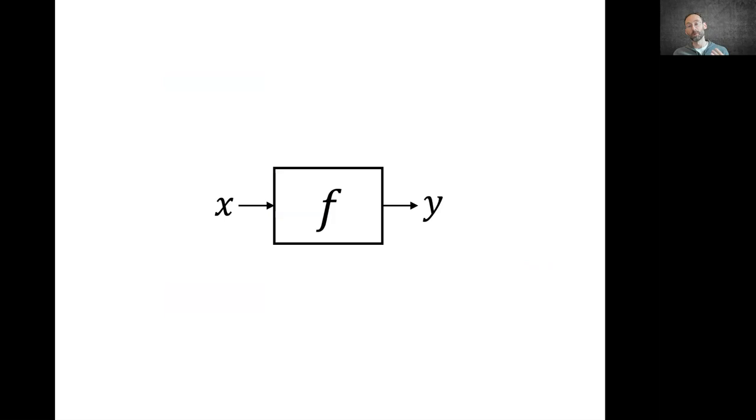The setting of this problem in low dimensions is a classical problem in approximation theory. It has been studied very extensively, and we have very precise control and results about the estimation errors. But the situation is entirely different in high dimension.